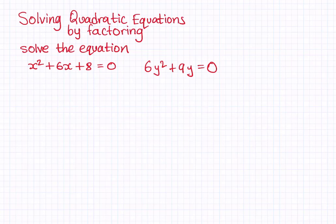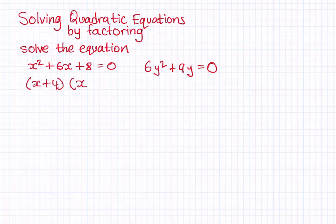So x squared plus 6x plus 8 is equal to 0. Let's first factorize it. We need to factorize using product and sum — the product is 8 and the sum is 6. We need two numbers that multiply to give 8 and add to give 6. Those numbers are 4 and 2: 4 plus 2 gives 6, and 4 times 2 gives positive 8. So the factorized form is (x + 4)(x + 2) = 0.